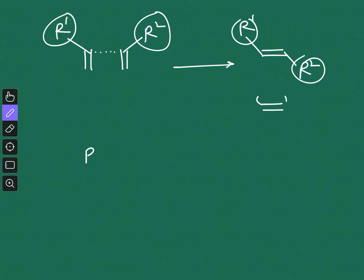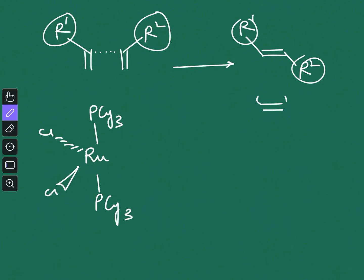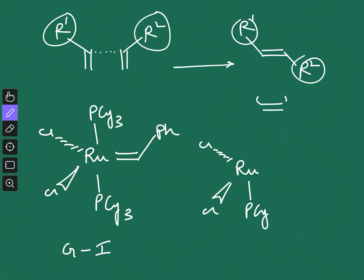The Grubbs catalyst is a ruthenium-based catalyst. The structure has two PCy3 groups — phosphine groups where three cyclohexane rings are attached to the phosphine — and a carbene group. This is the Grubbs first-generation catalyst. In the Grubbs second-generation catalyst, all the other groups are the same; the only difference is one of the phosphine ligands.